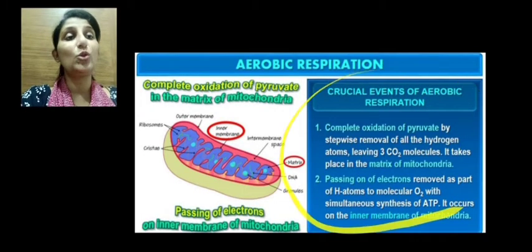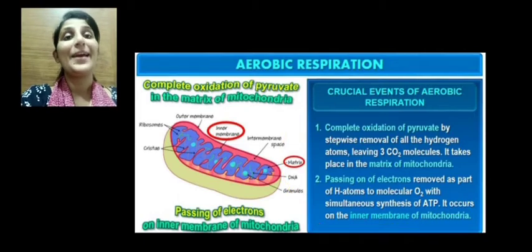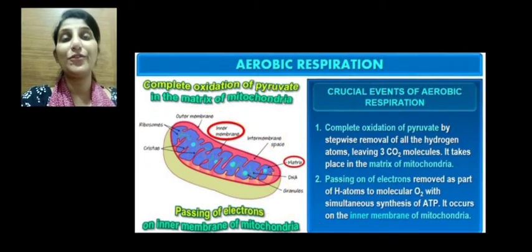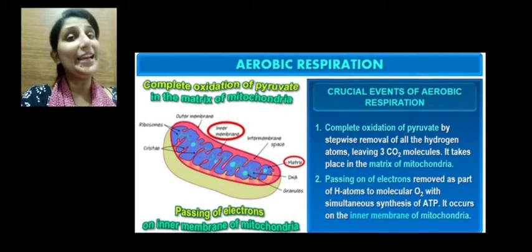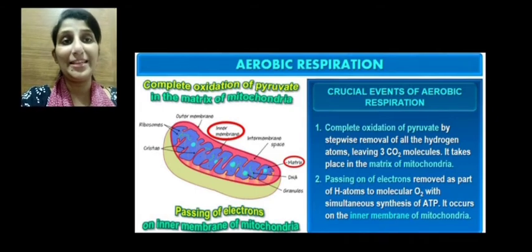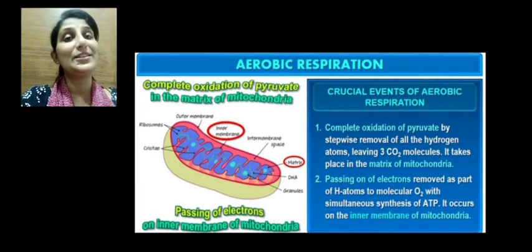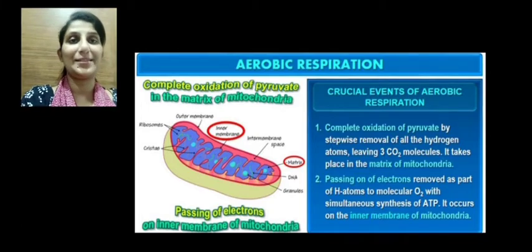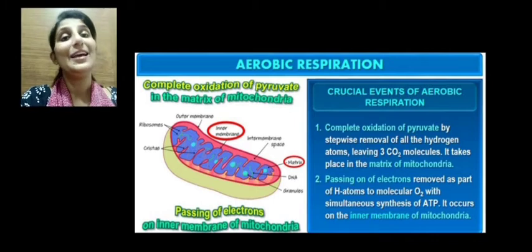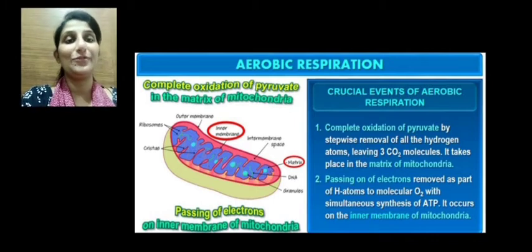Let's look at the crucial events taking place in aerobic respiration within the mitochondria, beginning with its structure. Mitochondria is a sausage-shaped structure with two membranes: an outer membrane and an inner membrane. The inner membrane has many infoldings called cristae, and it encloses a fluid medium called the matrix.